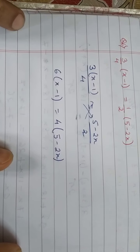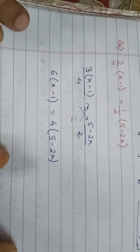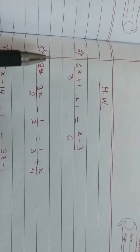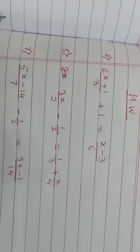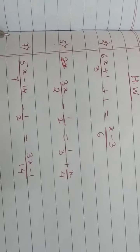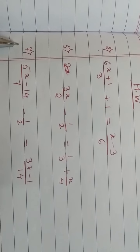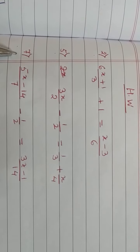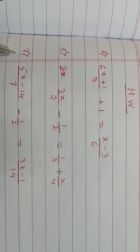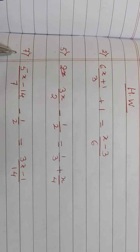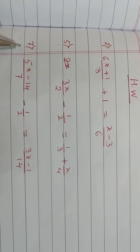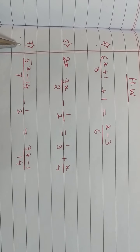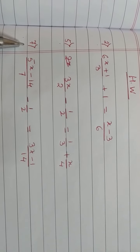Now note down today's homework: question number 2, question number 5, and question number 7. These 3 are today's homework. Today we have finished up to question number 7 of exercise 2.4. Thank you class, have a nice day.